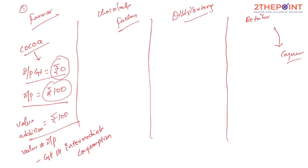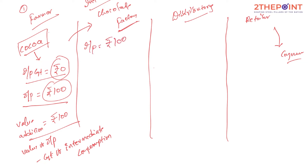The farmer sells 100 rupees worth of output — cocoa seeds — to the chocolate company. The chocolate factory purchases these cocoa seeds as input or raw material, what we call intermediate goods: goods that are meant for producing other goods and services. The input cost for this chocolate factory is 100 rupees.